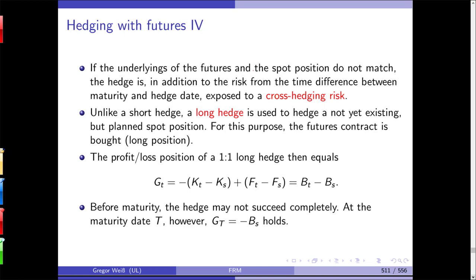In a long hedge, you use a future to hedge a not yet existing but planned spot position — you know that you want to buy in the future. This could be in the agricultural business where you need to buy raw materials, or in industry: if you are Daimler or BMW, you know that in a couple of months you need more steel, and you want to hedge the risk that the price for your raw materials goes up.